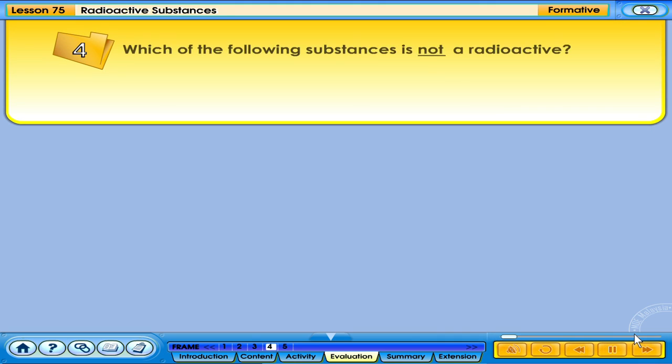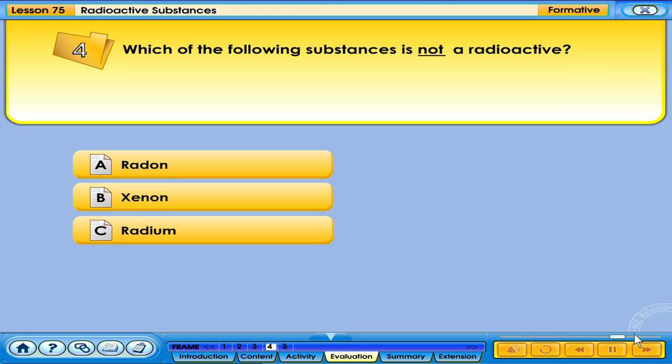Which of the following substances is not radioactive? A. Radon, B. Xenon, C. Radium, D. Thorium.